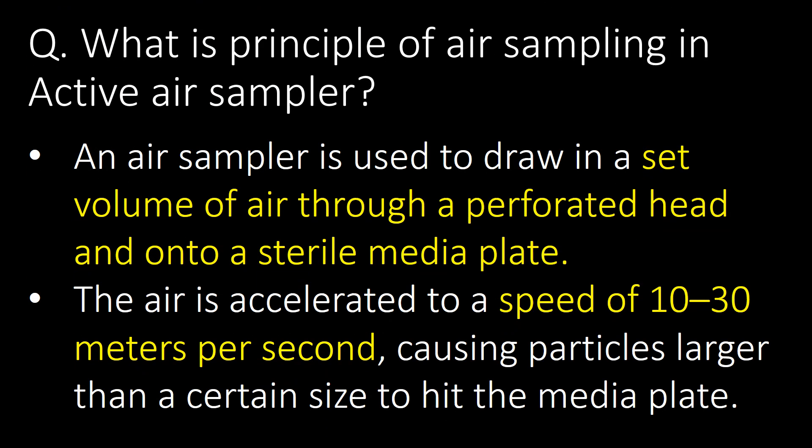Basic and important: what is the principle of air sampling in an active air sampler? An air sampler draws in a set volume of air through a perforated head and onto a sterile media plate. The air is accelerated to a speed of 10 to 30 meters per second, causing particles larger than a certain size to impact the media plate.